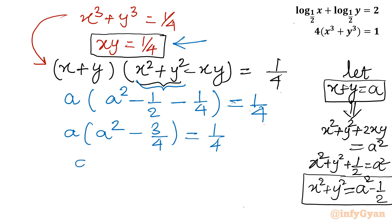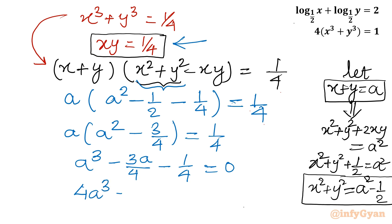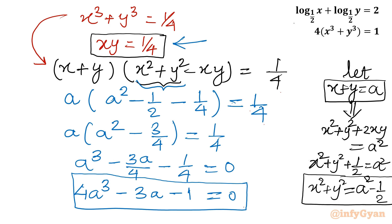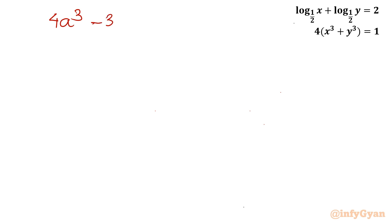Expanding gives a cube minus 3a by 4 minus 1 by 4 equal to 0. Multiplying through by 4, the equation becomes 4a cube minus 3a minus 1 equal to 0. This is one cubic equation and we have to find out its solutions.